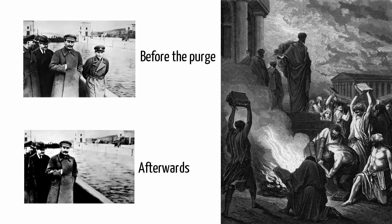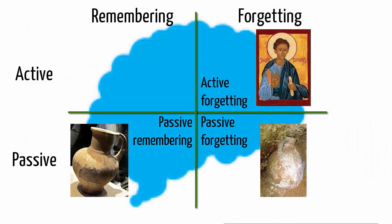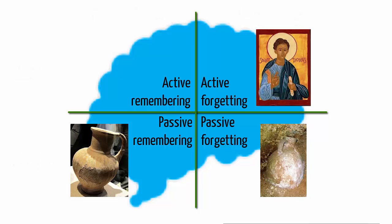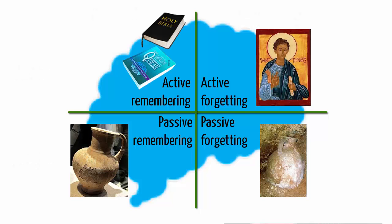Christians tried eradicating the Gospel of Thomas this way, and prior to 1000 AD it looked like they had succeeded. In the top left, we have active remembering. Holy texts sit in this quadrant. They are endlessly studied, as believers try to make sense of the world they live in by referring back to these books.